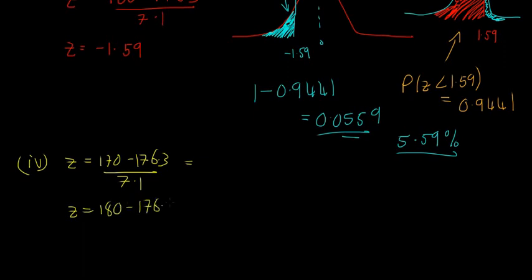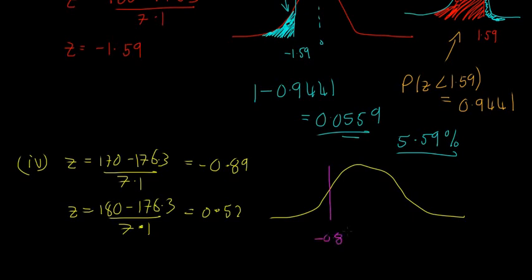So the Z-scores are minus 0.89 and plus 0.52. Okay, so that's the decimal points there. So if we were to draw this on a normal curve, and I'll go purple, okay, we want to get between minus 0.89 and 0.52. So we're trying to get this shaded bit here. So this is just a little bit more difficult. We have to do one or two different calculations to figure it out.